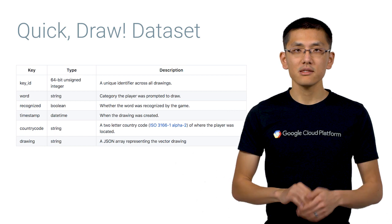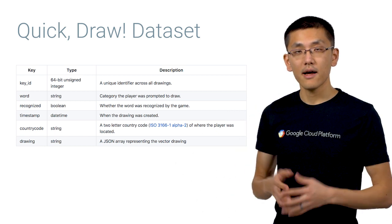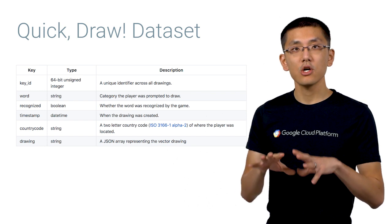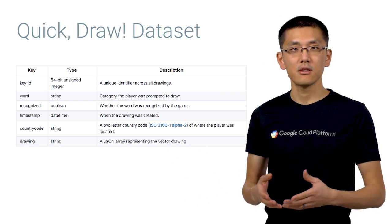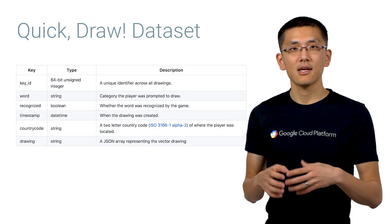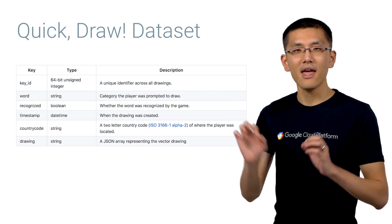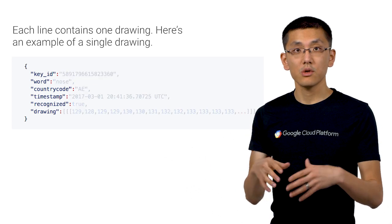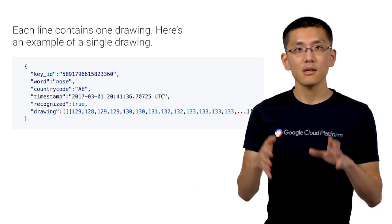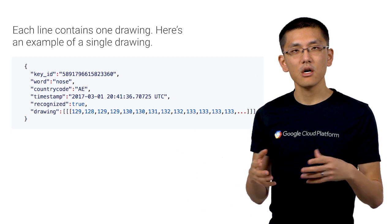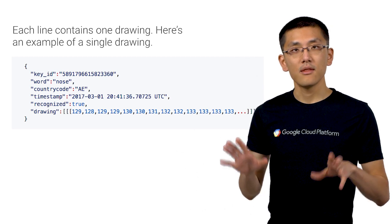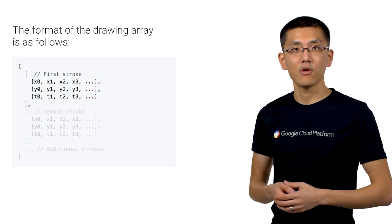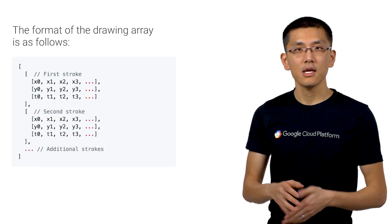There are four formats. First up is the raw files themselves, stored in .ndjson. These files include the full set of information for each doodle, including timing information for every stroke of every picture drawn. There's also a simplified version stored in the same format, which has some preprocessing applied to help normalize the data. This simplified version is also available as a binary format for more efficient storage and transfer.